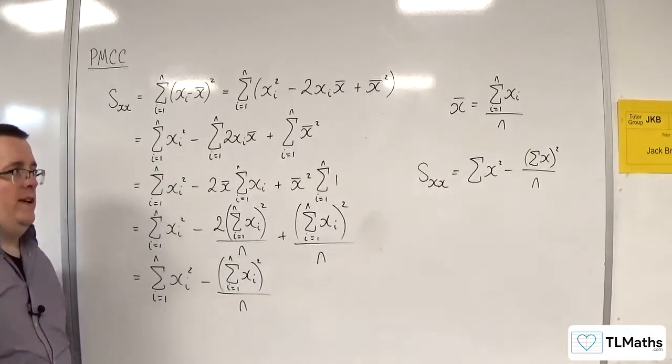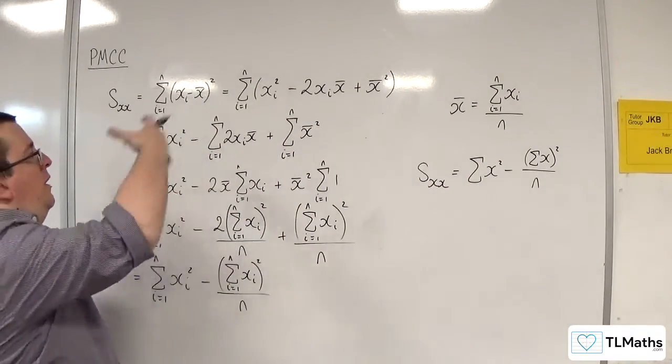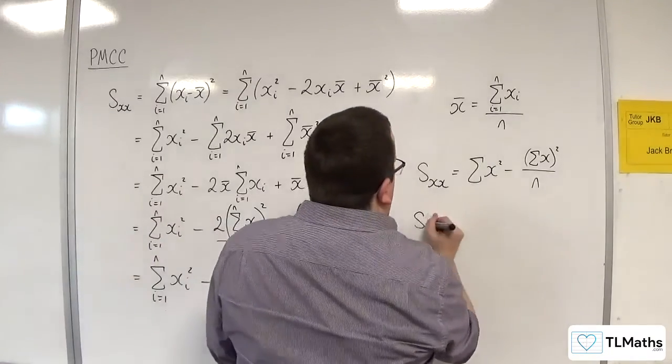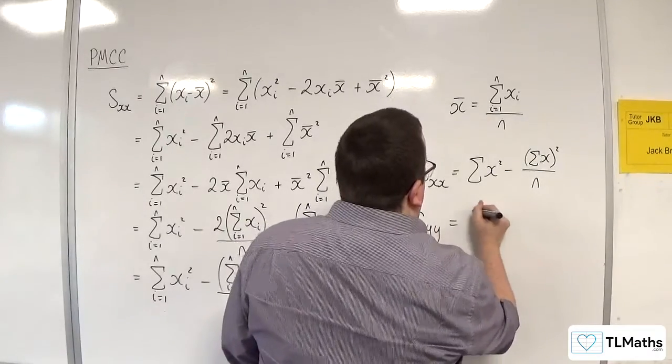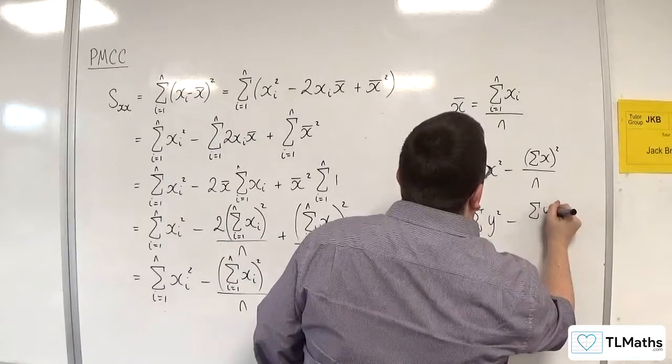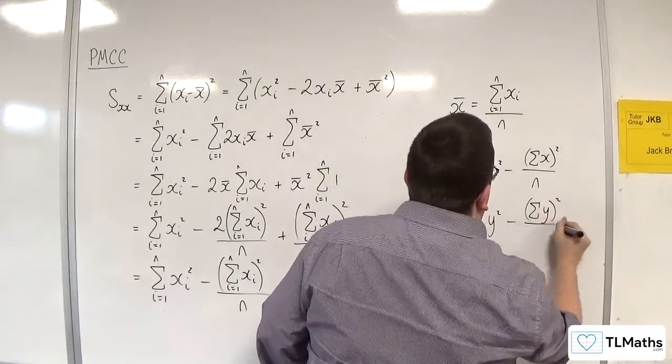And as I said at the beginning of this video, you can do SYY in exactly the same thing, just replace all the X's with Y's. So SYY is the sum of Y squared take away the sum of Y all squared divided by n.